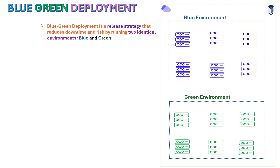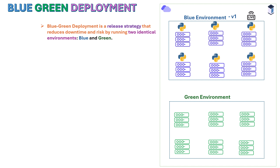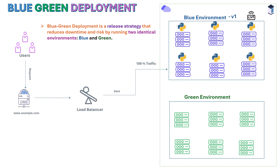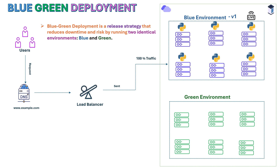And some other set of servers for the green environment. The blue environment is currently live and running with version 1 of the Python application. This setup can be used in both on-premise and cloud environments. Let's see how the blue environment is serving the traffic — on the left you can see some users who are sending requests through the domain.